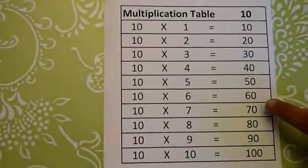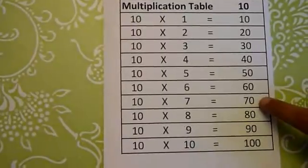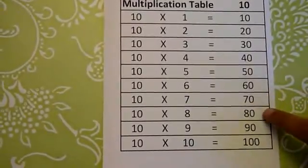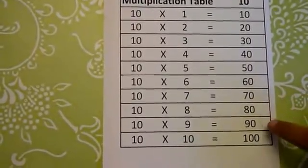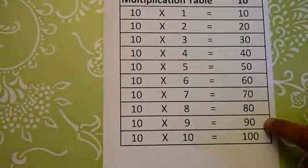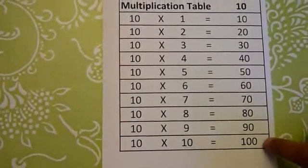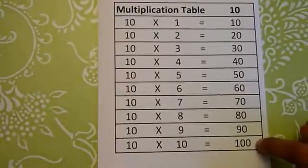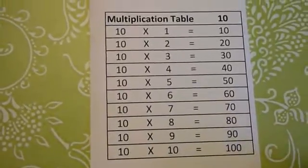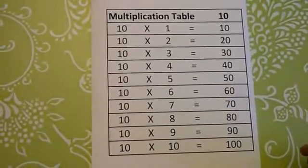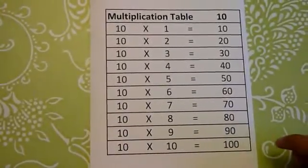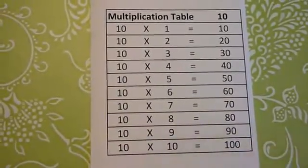10 6s are 60, 10 7s are 70, 10 8s are 80, 10 9s are 90, and 10 10s are 100. This is the multiplication table from 6 through 10. Thanks for watching.